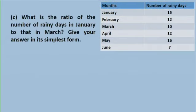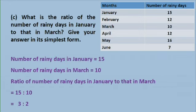Part C: what is the ratio of the number of rainy days in January to that in March, in simplest form? In January we had 15 rainy days, in March 10. So the ratio is 15 to 10. Reduced to its lowest term by dividing by 5, that is 3 to 2.